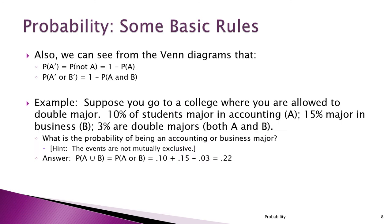For the Venn diagrams, you can also see the probability of A prime, which means not A — it's 1 minus the probability of A. And the probability of not A or not B is 1 minus the probability of A and B.